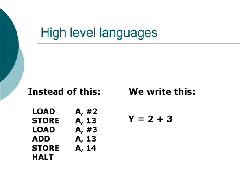What we really want is, instead of that big mess on the left, something like on the right, where we just say Y is equal to 2 plus 3, and the answer that we want is in Y. That's exactly what the higher-level languages allow us to do. Every statement that we write in a higher-level language can translate to 2, 3, or 20 of these very low-level machine language instructions. Of course, now we need a translator that will translate this high-level stuff into the binary codes that the computer understands, because the computer only understands the binary codes.